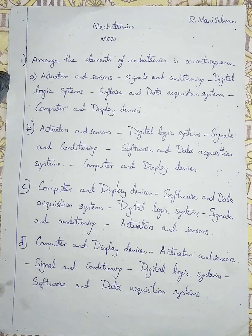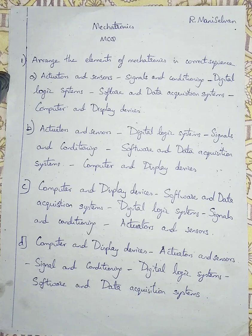Question number 1: Arrange the elements of mechatronics in correct sequence. Option A is given as actuators and sensors, then signals and conditioning...